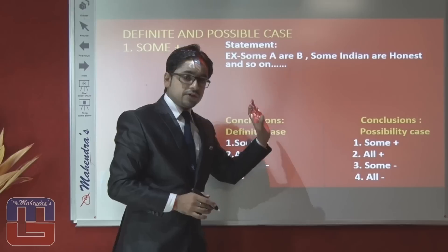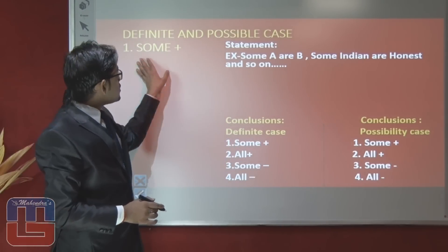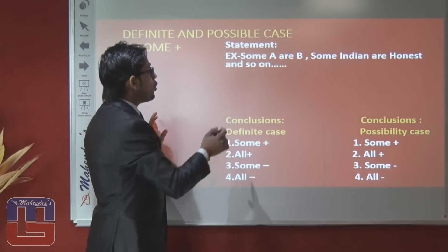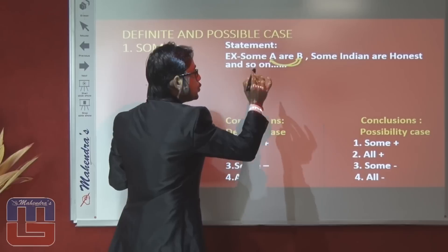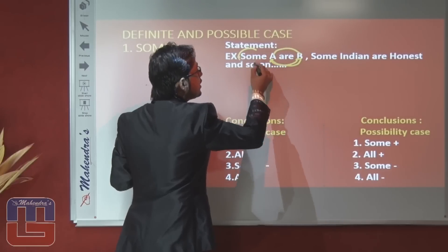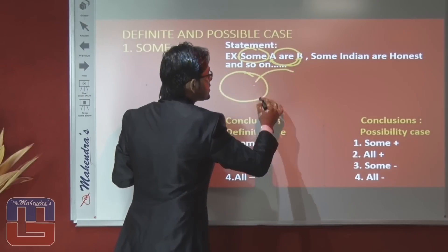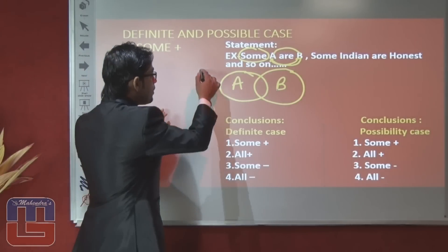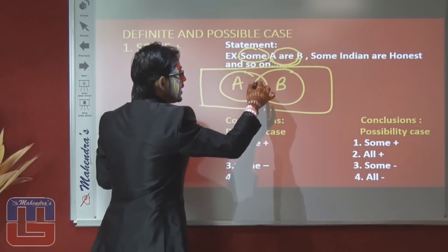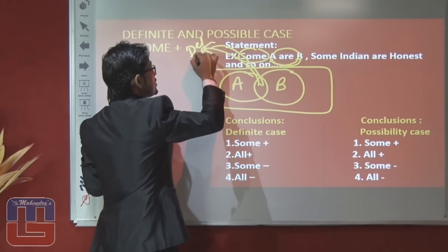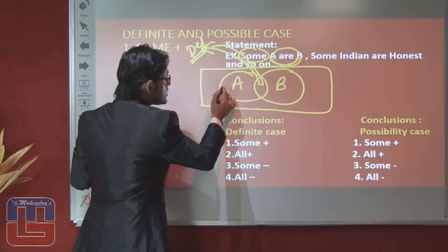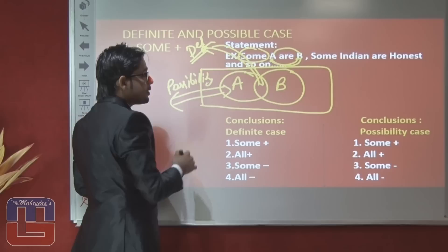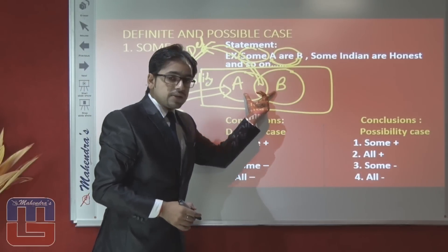For any statement, generally 16 conclusions can be asked. The first statement says 'some A are B' or 'some Indians are honest.' It doesn't matter what is written — just be aware of the functioning of these two variables in the case of some positive. Whenever you find some relation between two entities, do remember: this circle is the area of definite case, written in definite manner, and the outer area is the area of possibility. While answering the question, note whether the relation between the two variables is same or different.